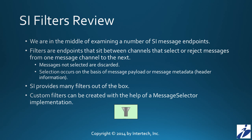In review, as we are in the middle of examining a number of Spring Integration message endpoints, recall that in our last tutorial we explored filters. Filters are endpoints that sit between channels and select or reject messages based on either the contents or payload of that message, or metadata associated to that message. Spring Integration provides a number of filters out of the box, and in part of your last lab you explored some of those. As well, with almost all components in Spring Integration, they also provide the means for providing your own custom filter, which can be created with the assistance of a message selector. You also looked at a message selector and the development of your own custom filter as part of the last lab.